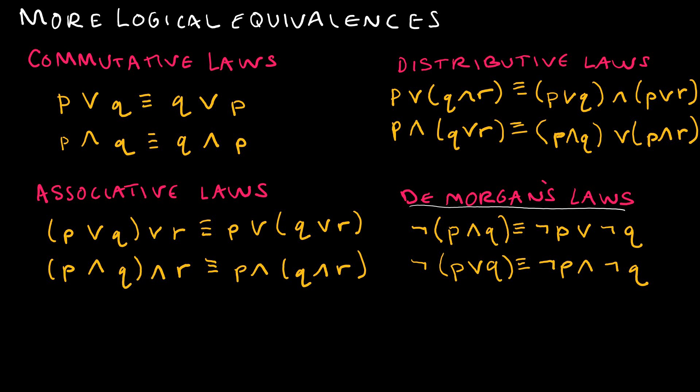For the associative laws, be careful here. The associative laws, again, we're looking at the same. So if it's an or, it continues to be or. If it's an and, it continues to be and. And again, associative just deals with grouping. So this one is order. This one is grouping.